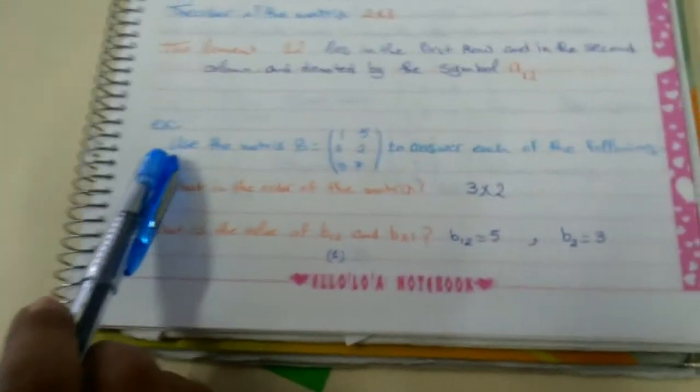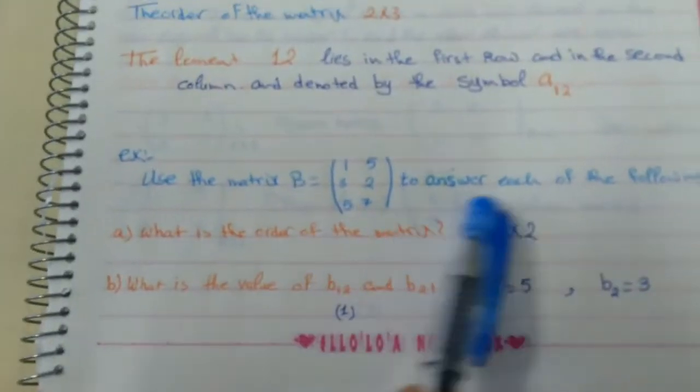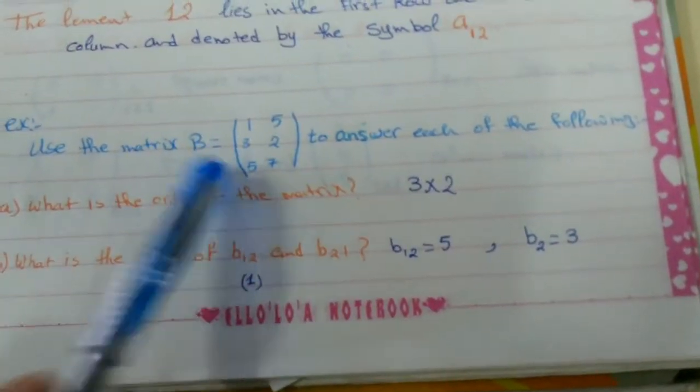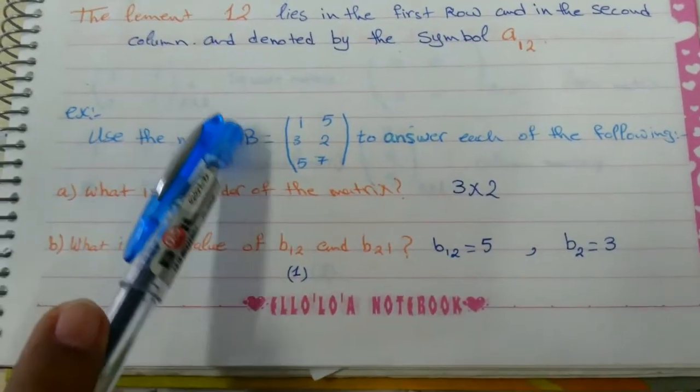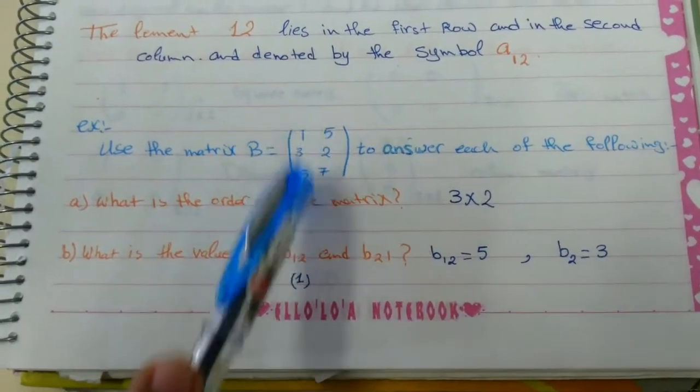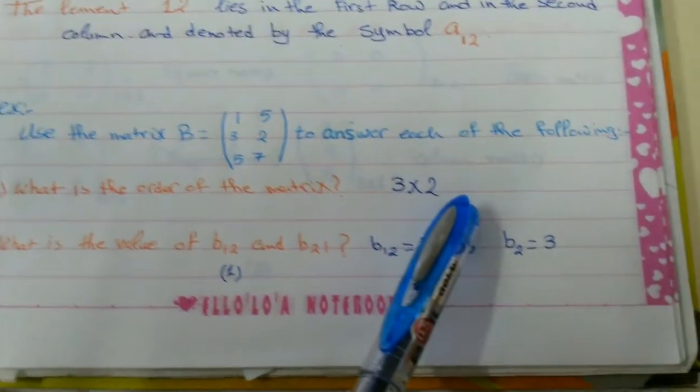Example for this, use the matrix B to answer each of the following. What is the order of the matrix? The order of matrix B, we say first we write the rows. How many rows? 1, 2, 3. 3. How many columns? 2. 3 by 2.